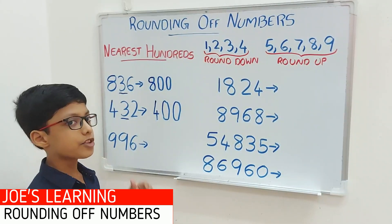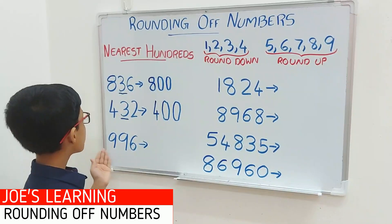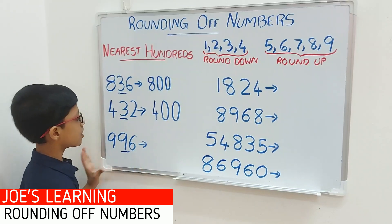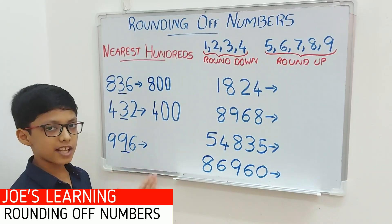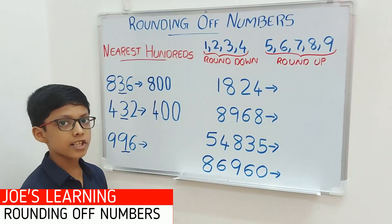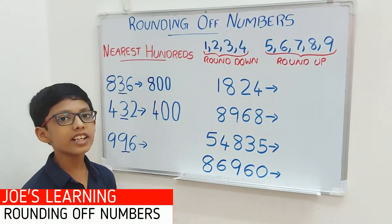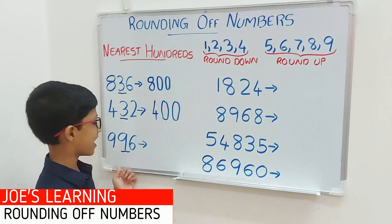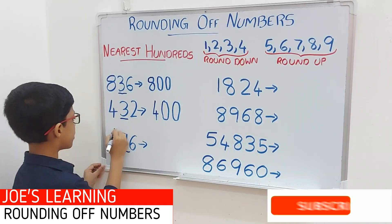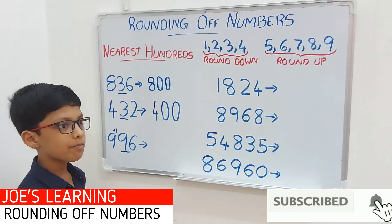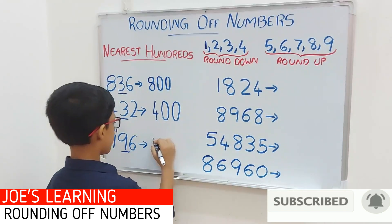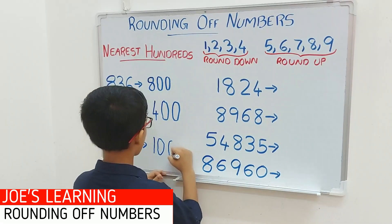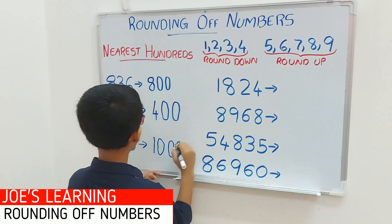Now let's take a look at this example, that is 996. We have to first look at the digit in the tens space — 9 is in the tens space. We compare it with 5: 9 is greater than 5. So we have to put a 0 in the ones and tens space and add 1 to the digit in the hundreds space. So 996 rounded off to the nearest hundreds equals 1000.